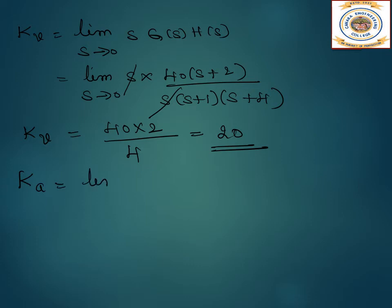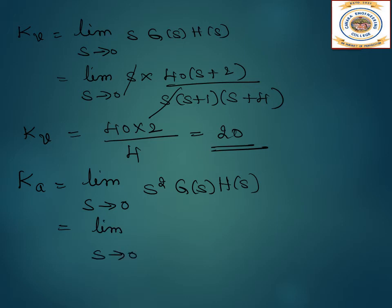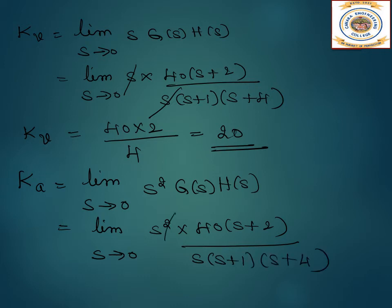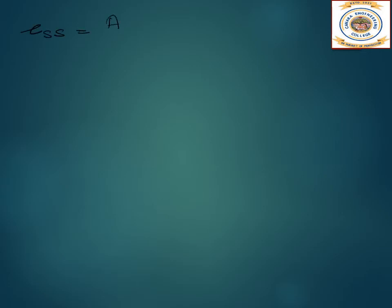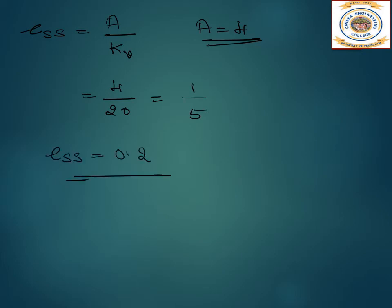For Ka: limit s→0 of s²·G(s)H(s) = limit s→0 of s²×40(s+2)/[s(s+1)(s+4)]. One s cancels but s remains in numerator, and applying limits gives Ka = 0. For steady state error with ramp input of magnitude A = 4: ess = A/Kv = 4/20 = 0.2. So ess = 0.2.